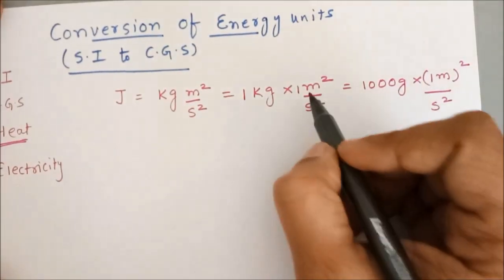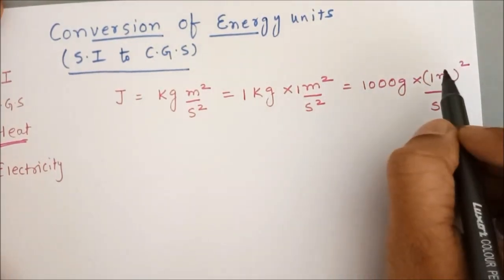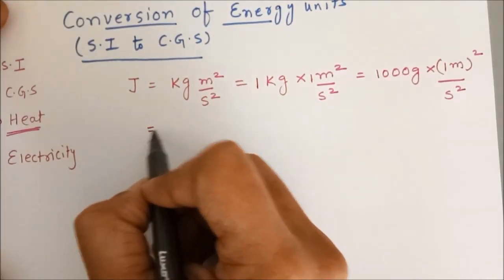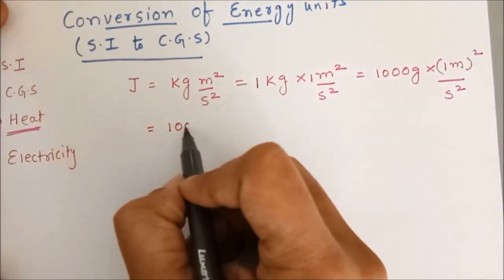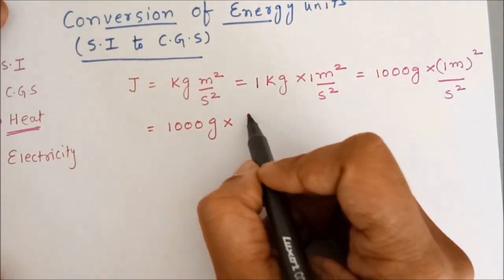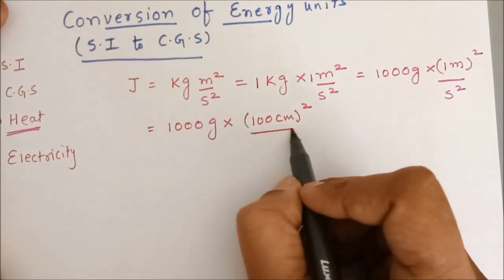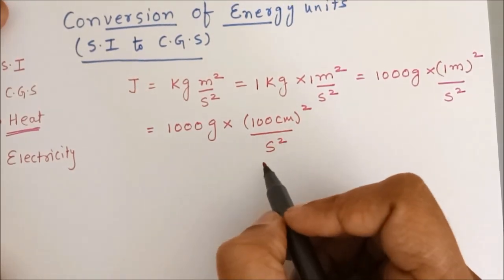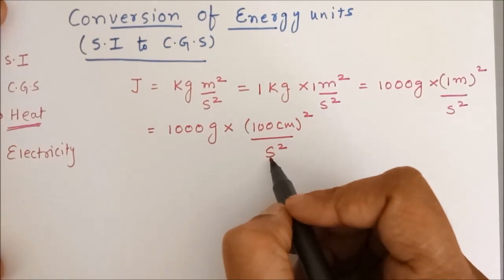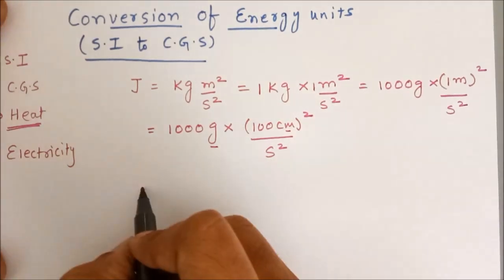We may also choose to put this 1 inside the bracket as 1 square is 1 only, so it is not going to affect our mathematical calculations. Now, this is 1000 gram multiplied by 1 meter is 100 centimeter whole square upon second square, we need not to convert time because time is already in the CGS unit. So, this is CGS unit, this is CGS unit and this one is also in CGS unit.